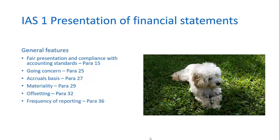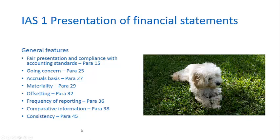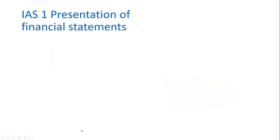The frequency of reporting is identified, the requirement to provide comparative information is identified, and consistency is given some pre-eminence. These items supplement what we think about financial reporting — how they're prepared, when they're presented — and a lot of these issues could have been addressed in chapters 1, 2, and 3 of the framework. Arguably, there is some redundancy across them.